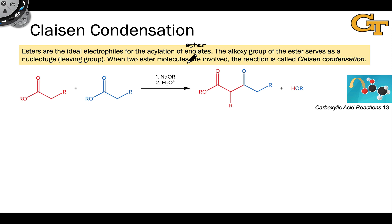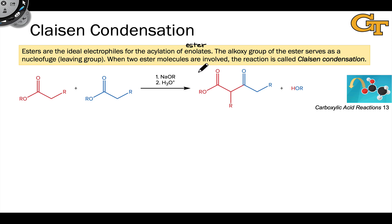It is possible to acylate ketone enolates using esters as the electrophiles under certain conditions, but we've got to be a little bit careful. If we think back to the problems with crossed aldol condensations, we'll realize that similar issues apply here. The enolate can generate other enolates, which could generate a variety of addition or substitution products that would lead to a mess.